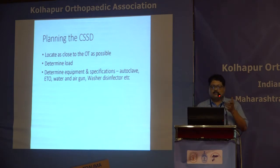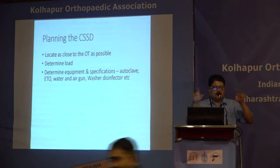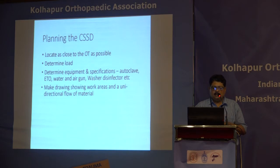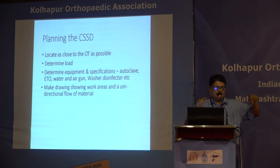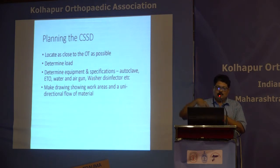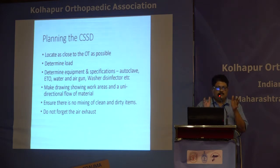Determine the equipment and specifications to handle the load — what size of autoclave is needed, and whether to use washer-disinfectors or ultrasonic cleaners. Define the equipment, specifications, and floor sizes. Then make a first drawing and verify that there is a unidirectional flow of material: anything that comes to the cleaning area should flow in one direction. Clean and dirty should never mix — this is what accreditation inspectors also look for.